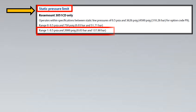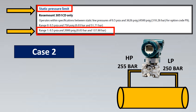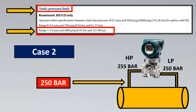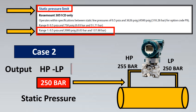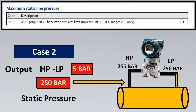In the same catalog, you'll notice something called a static pressure limit. For range 1, the maximum static pressure it can experience is 137 bar. However, in our second example, the common pressure hitting both legs was 250 bar. If you used the 3051CD for that range, even though the DP output of 5 bar fits your range, your transmitter would not be able to sustain that static pressure.